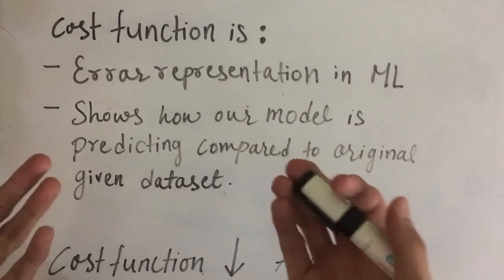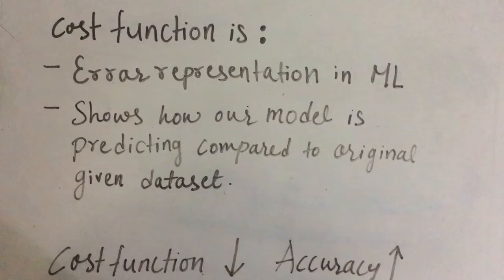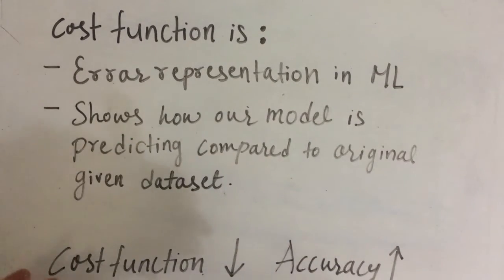But if only 20 predictions are right, then we say we have a higher error and thus higher cost function. So more the cost function, lesser the accuracy, and lesser the cost function, more the accuracy. What we want to do is minimize this cost function.